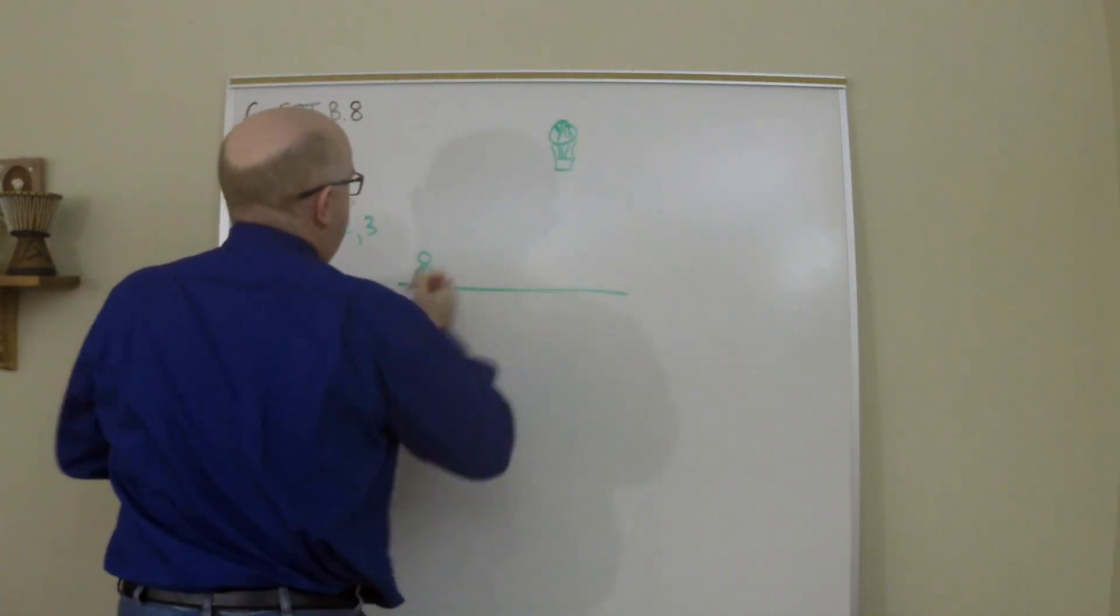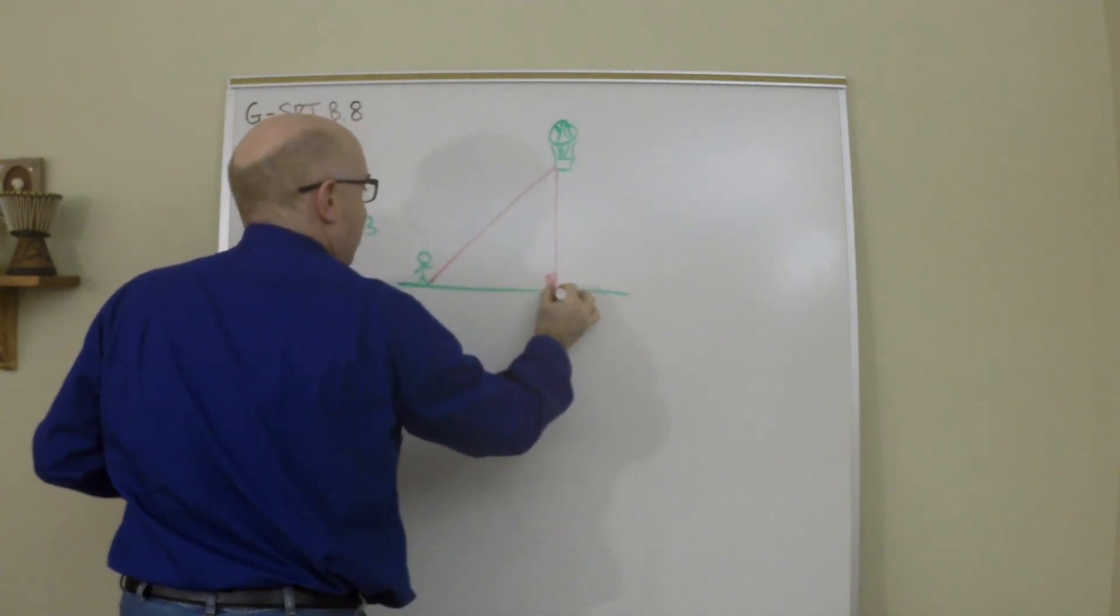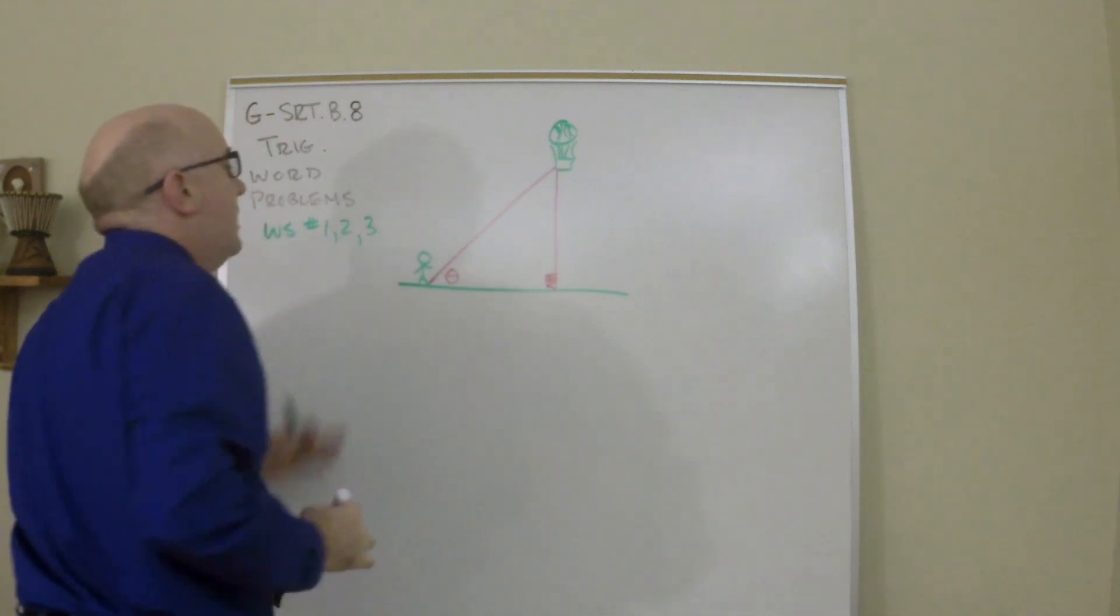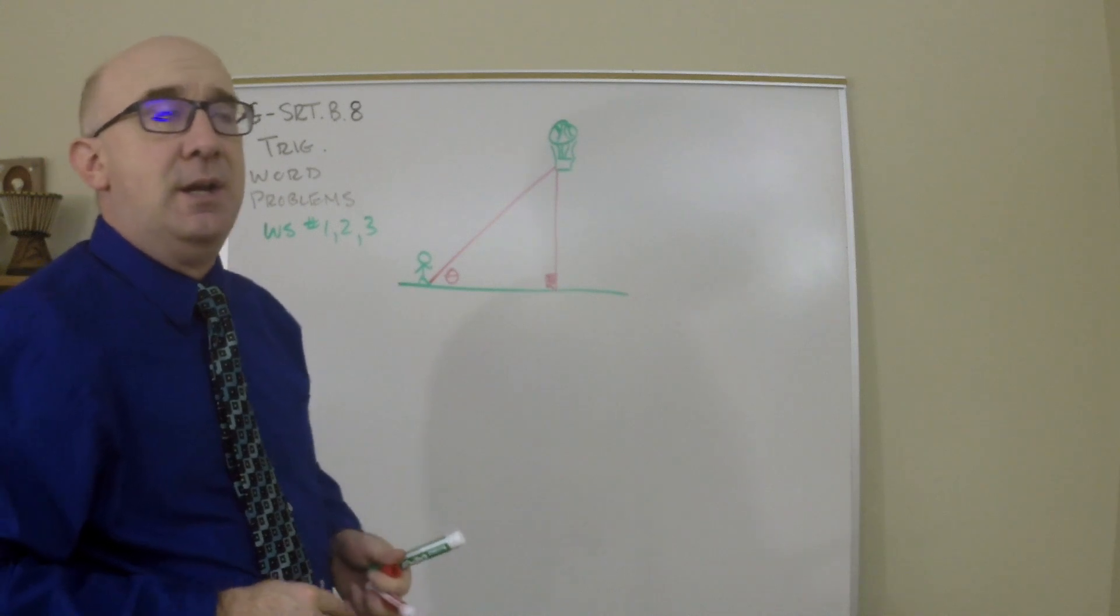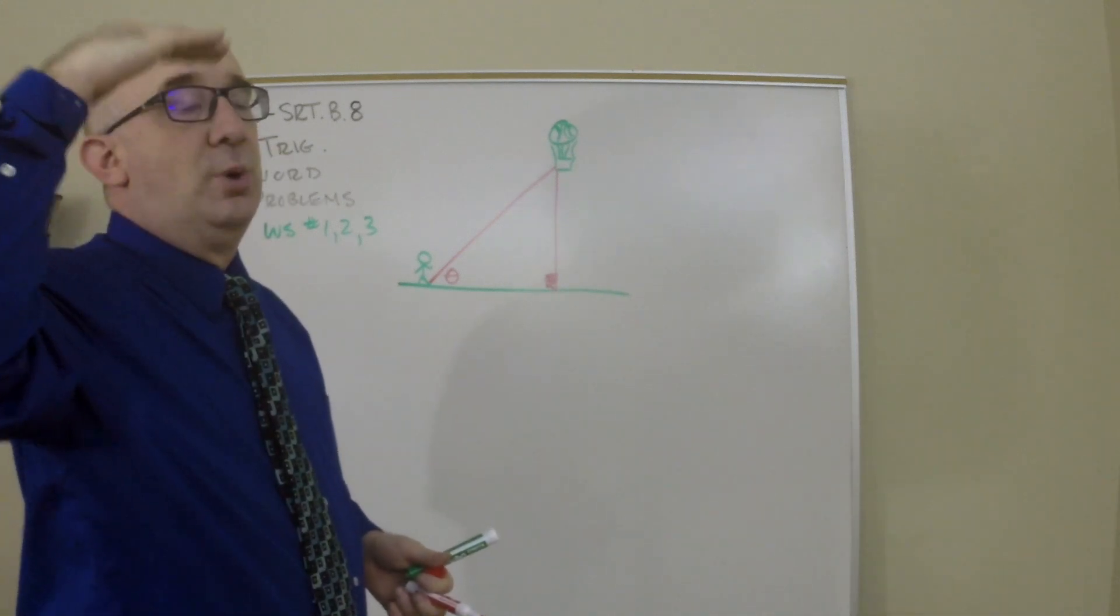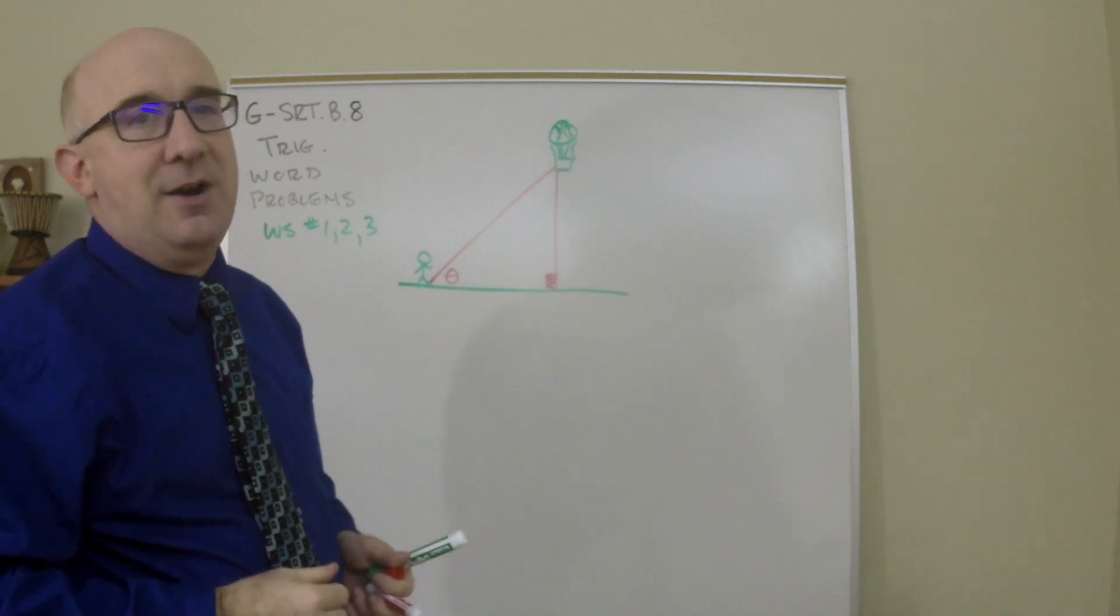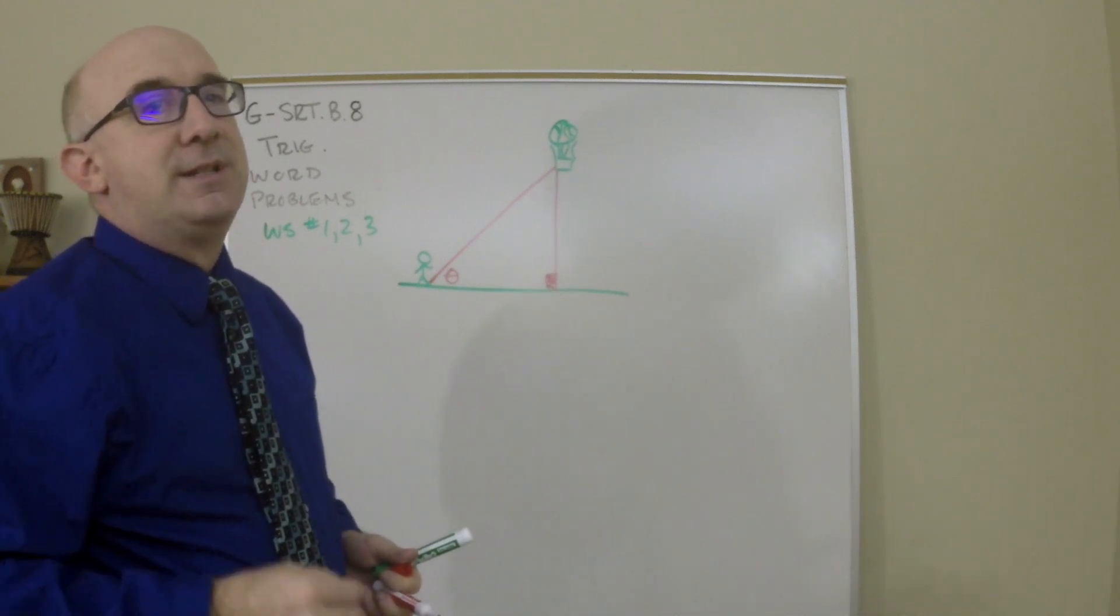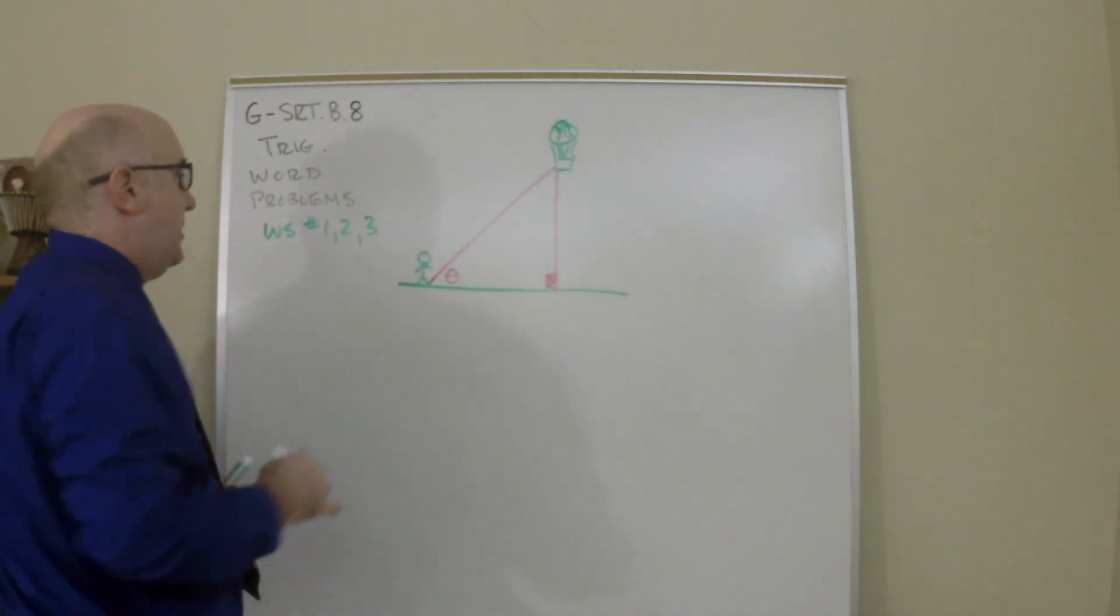So when we cast our eyes up, we look up at it. The angle of elevation is here. One thing I want you to notice about trig problems: we oversimplify them because unless you're told your eye height and a bunch of things, you would not be able to easily calculate this.